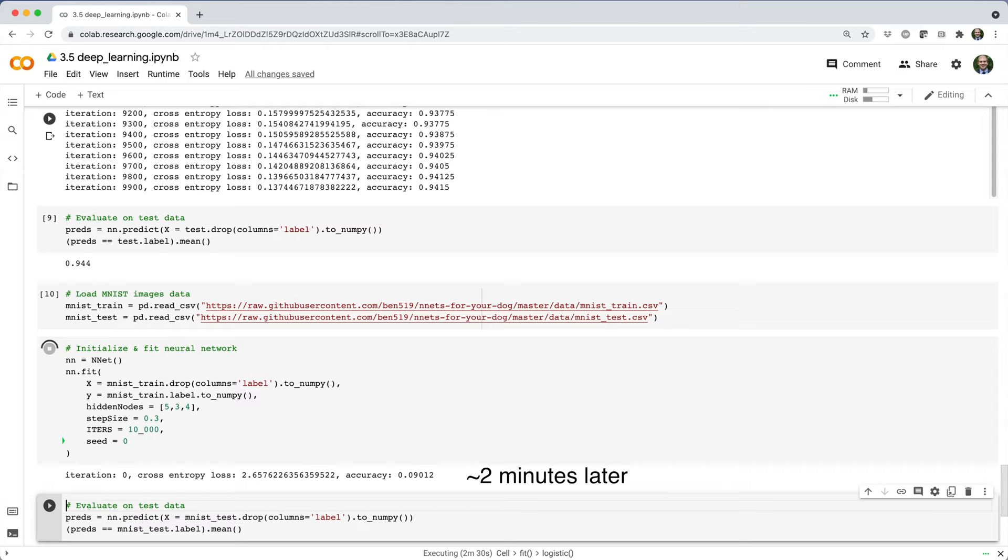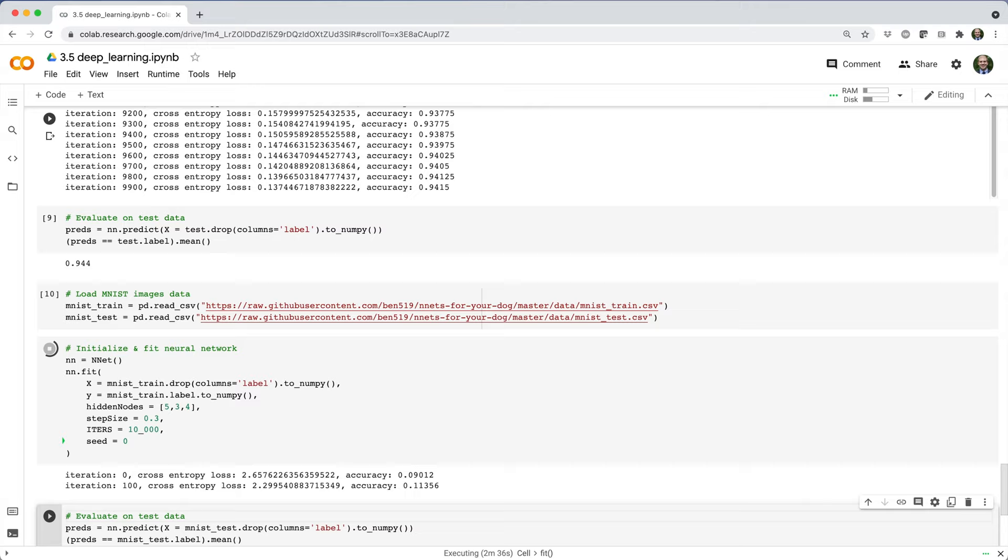Unfortunately, our deep neural network is going to take a very, very long time to train on the MNIST dataset, so we need a way to speed it up. And we'll do that in the next section via Stochastic Gradient Descent.